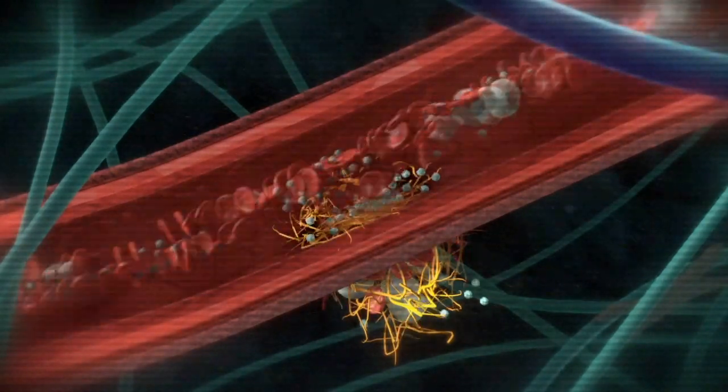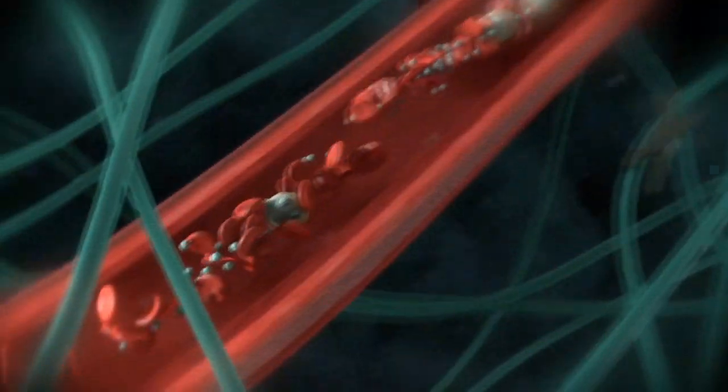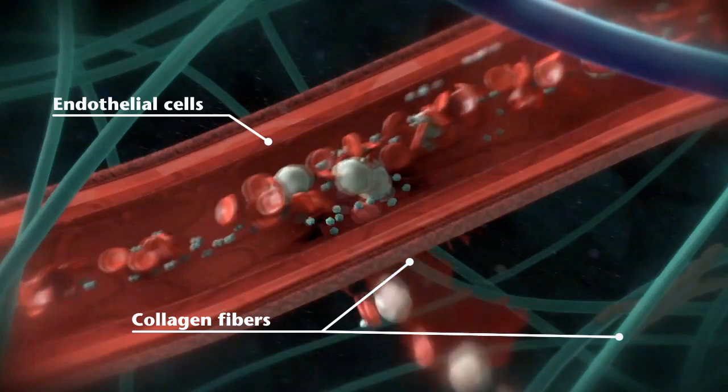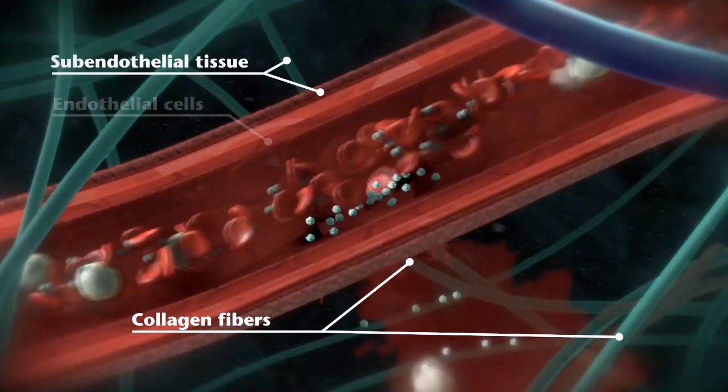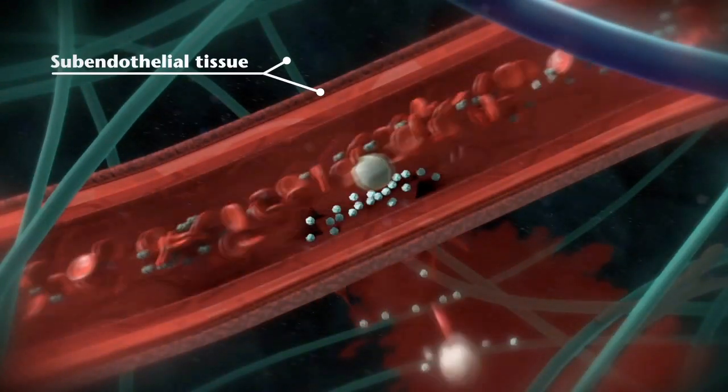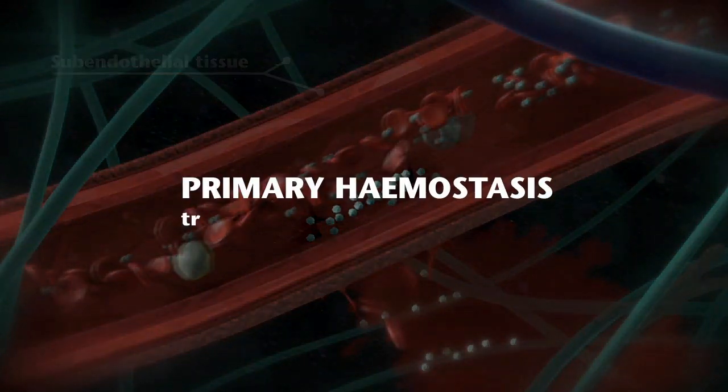Let's go back and zoom in on the moment the vessel is injured. Platelets adhere to von Willebrand factor and collagen fibers present in subendothelial tissue where they form aggregates. This process is called primary hemostasis.